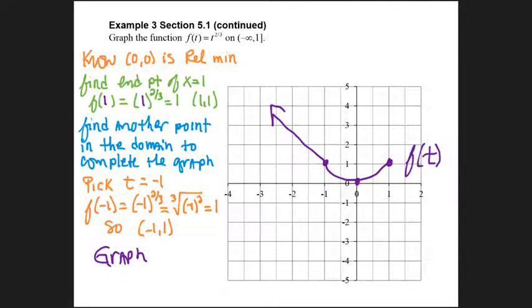Now I'm ready to graph. We already knew (0, 0) is a relative minimum. I found my endpoint t equals 1, plugged it into the function to get (1, 1). Then I needed another point in the domain to complete the graph. I picked t as negative 1—you could pick negative 2, negative 15, whatever. When I plugged negative 1 into the original function, I got (-1, 1) and graphed.